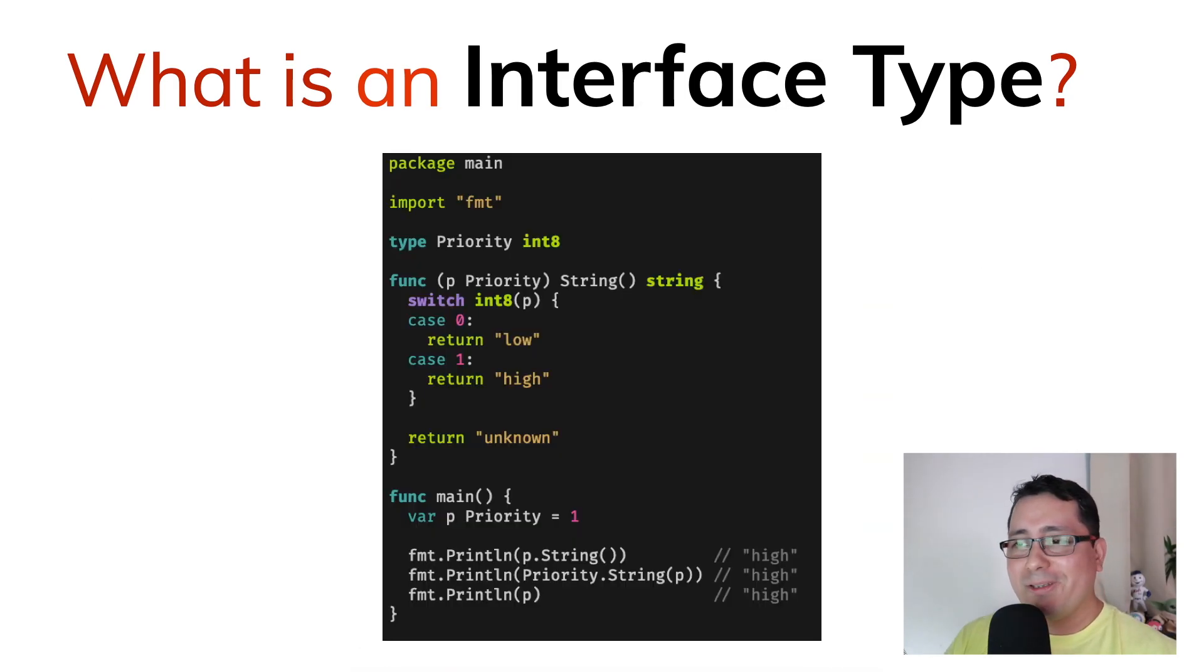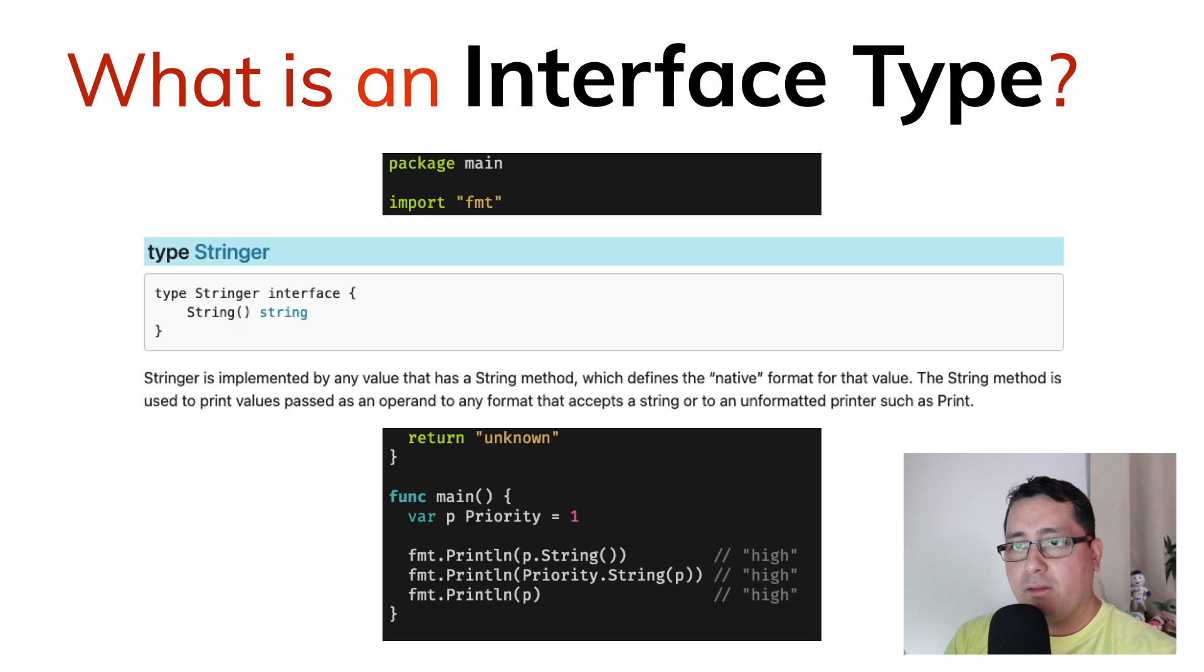Let's go back to the code that I was showing you before, and I want to highlight this. So why is this working? Well, we have a type that is implemented in the fmt package called stringer, and that stringer defines a method called string that happens to return a string.